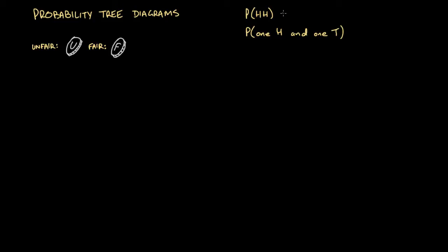So far we're good at understanding how to solve simpler problems, but when there are multiple events that cover our condition we haven't yet figured out a system to determine the probability. That's what we're going to do in this video — we're going to be looking at probability tree diagrams. We're going to consider a question where we might have an unfair coin and a fair coin, labelled U and F respectively.